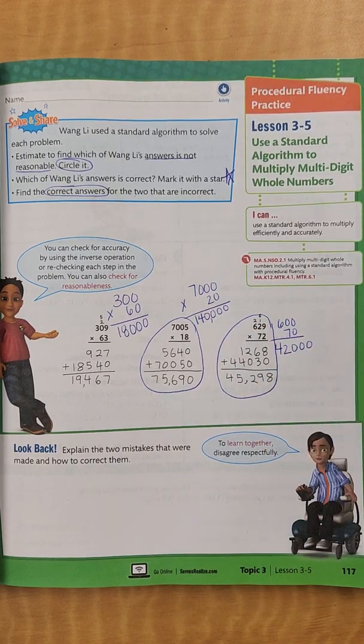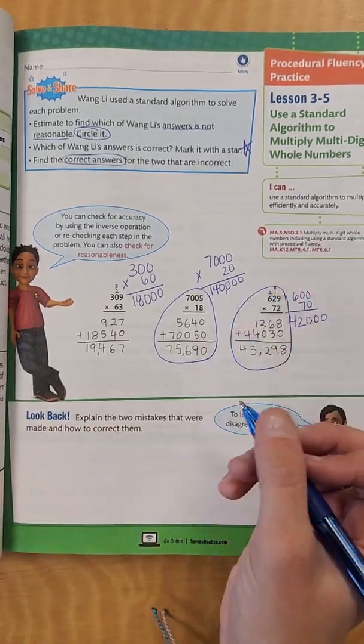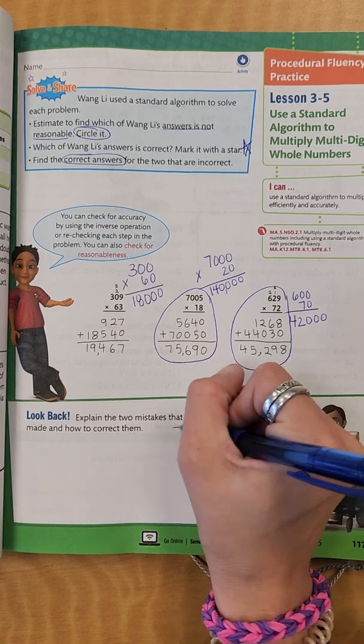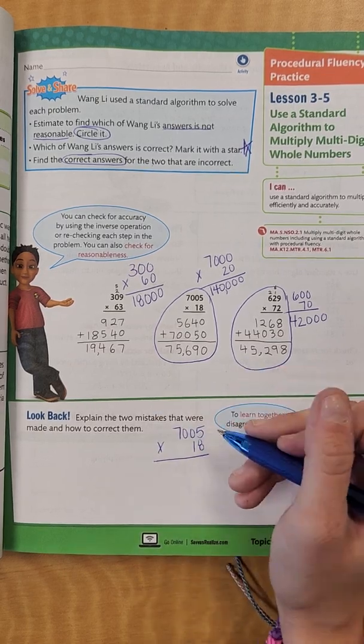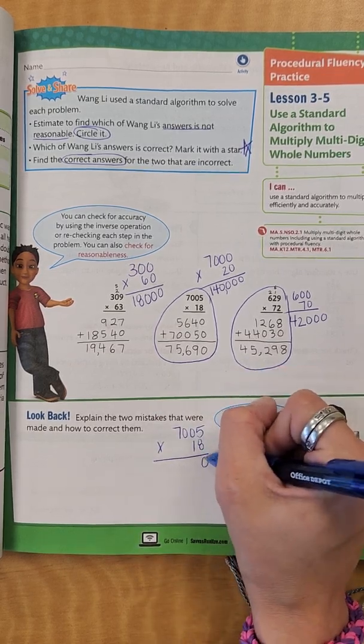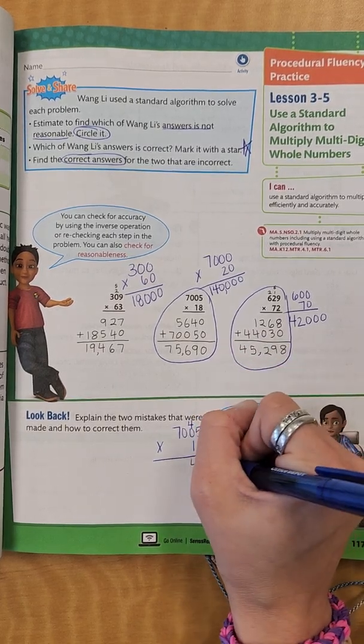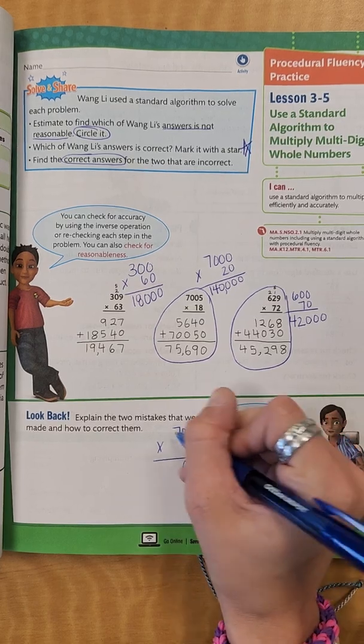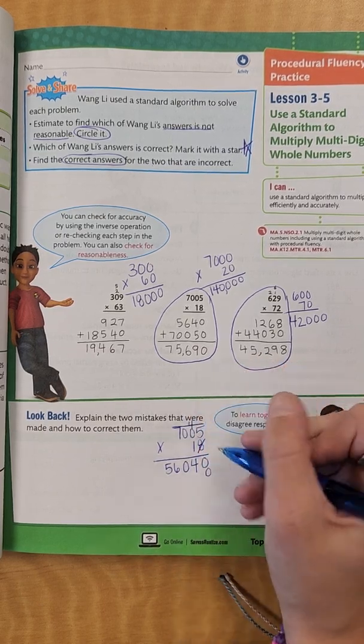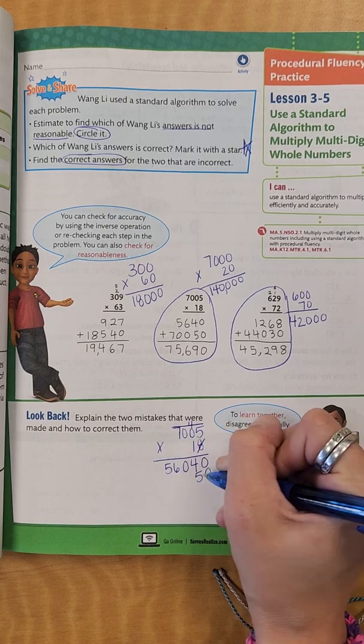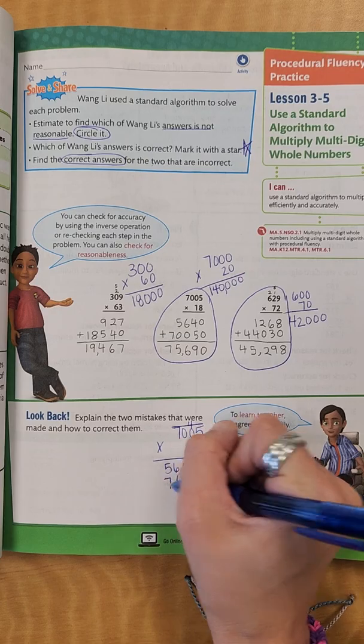Now we're going to find the exact answers to both of these. So now I have 7,005 times 18. So let's do the standard algorithm. We have 5 times 8 is 40 - put down my 0, regroup my 4. 8 times 0 is 0, plus 4 is 4. 8 times 0 is 0, and 8 times 7 is 56. Now I'm going to cross this out, put down my 0, and start again. 1 times 5 is 5, 1 times 0 is 0, 1 times 0 is 0, 1 times 7 is 7.